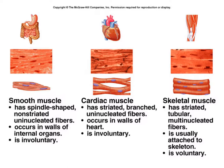Cardiac muscle is striated and is branched with uninucleated fibers. They are connected via a structure called an intercalated disc. These are found in the wall of the heart and are also involuntary.